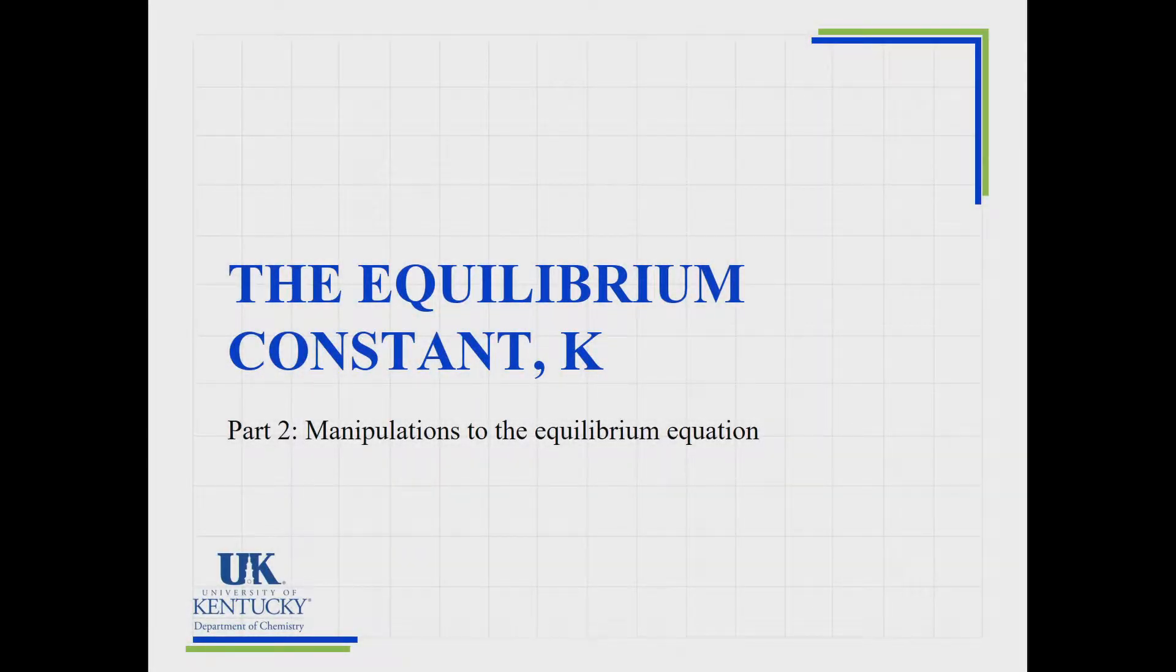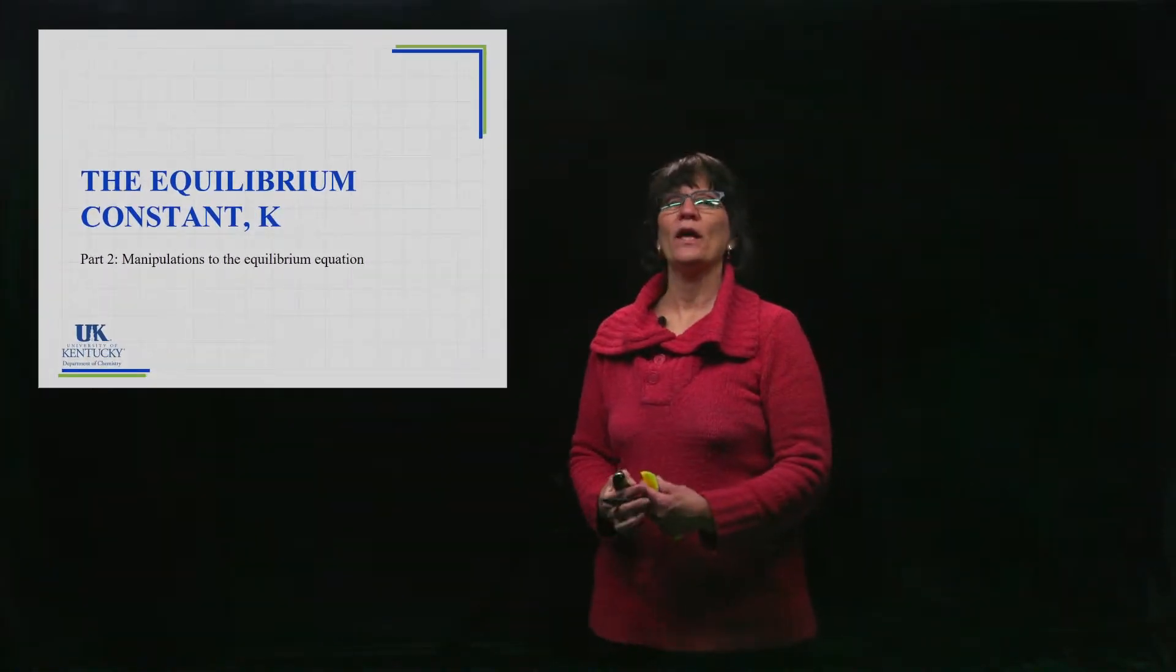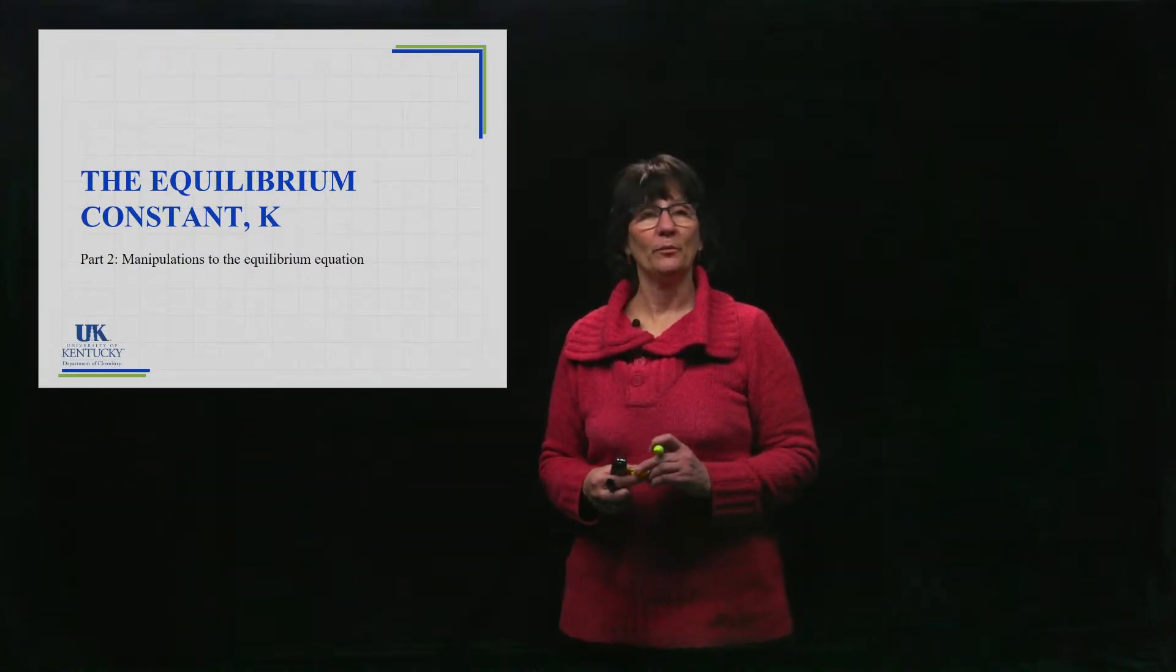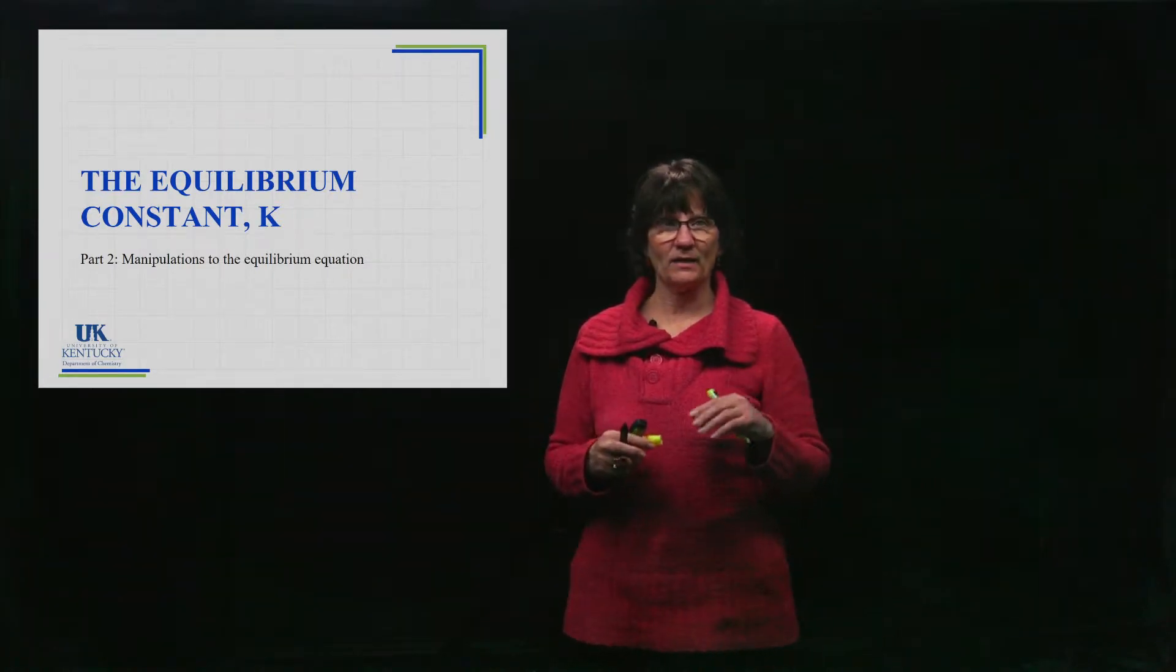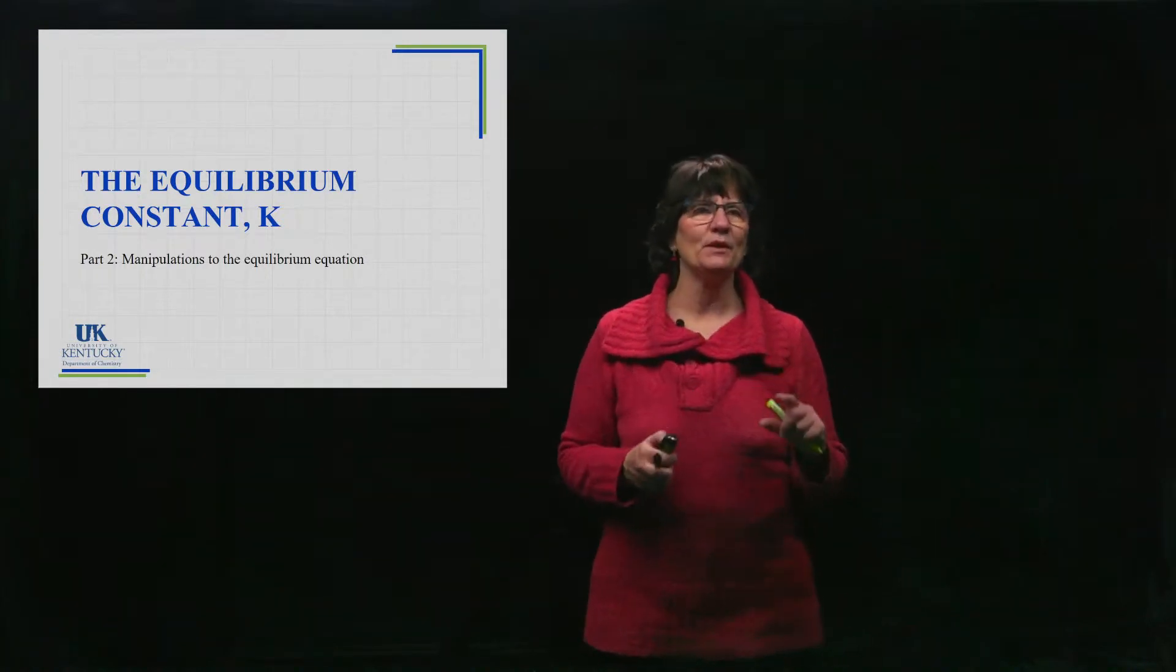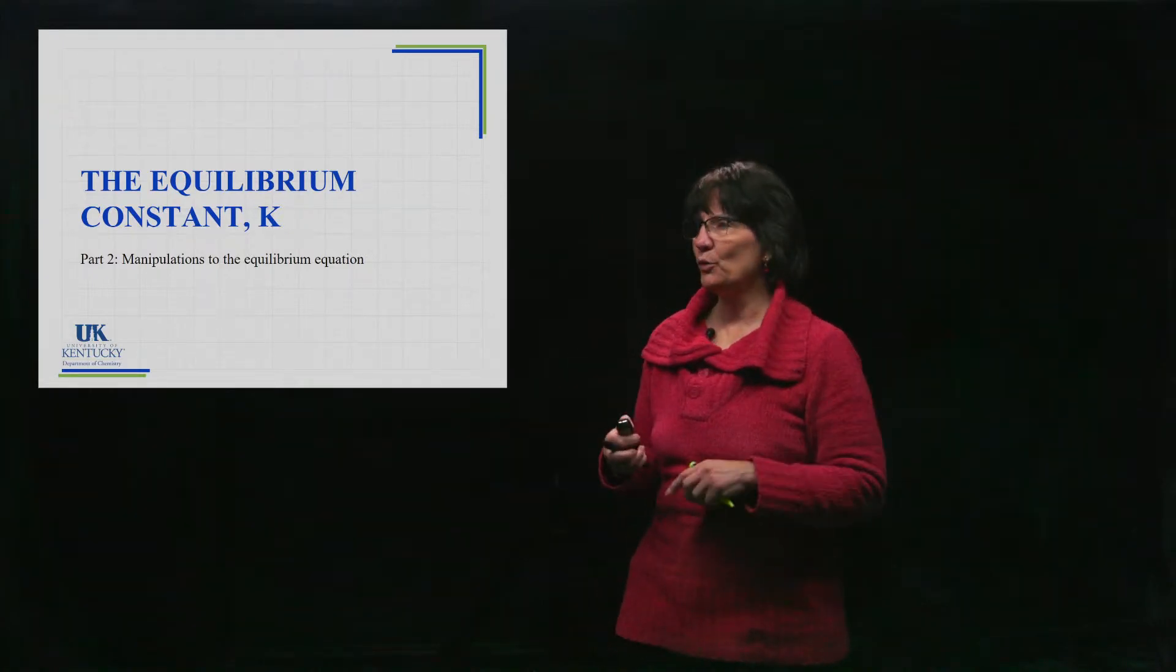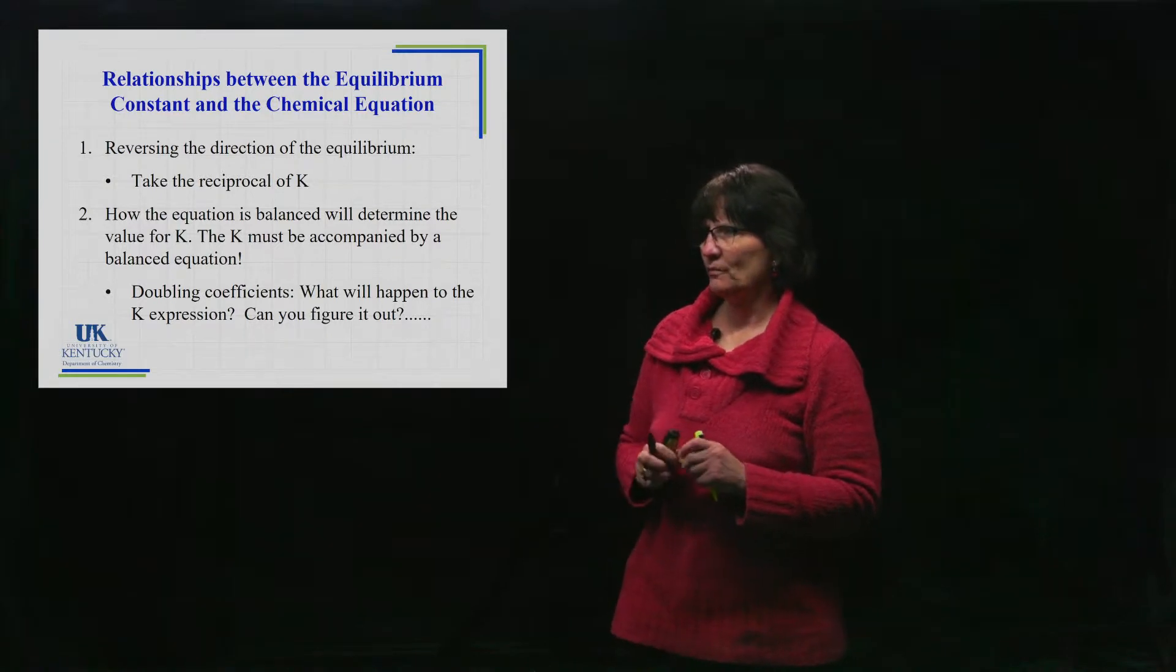Continuing our discussion about equilibrium constants, we need to understand that the way you write a reaction gives you the value of the equilibrium constant because the expression is products over reactants raised to the power of their coefficients. We're going to look at manipulating reactions to change them a little bit and see how that will affect the value of K.